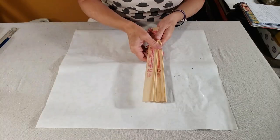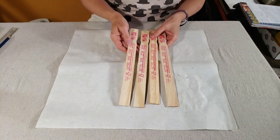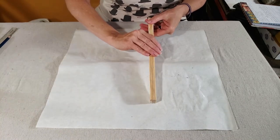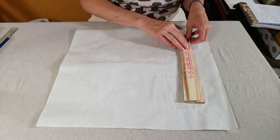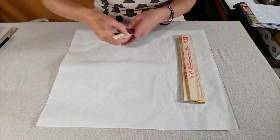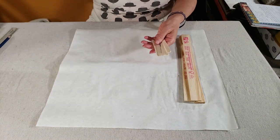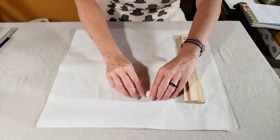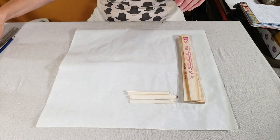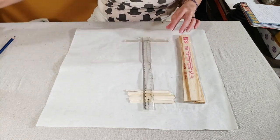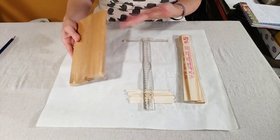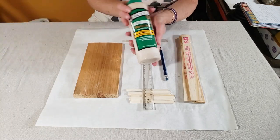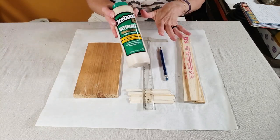To make the flat display, you need four paint stir sticks. And you want to make sure that you don't have ones that are warped. So just check and make sure that they're nice and straight. You need a T-square, a straight edge, you could use a book, I just have this block of wood, something to write with, and you're going to need a little bit of wood glue to hook everything together.